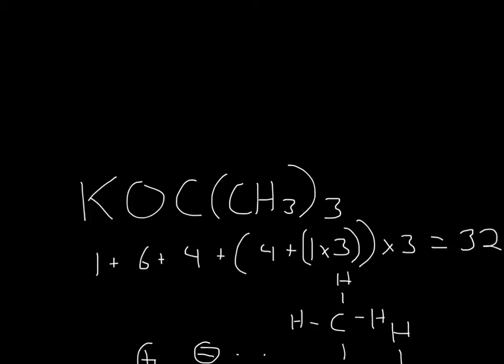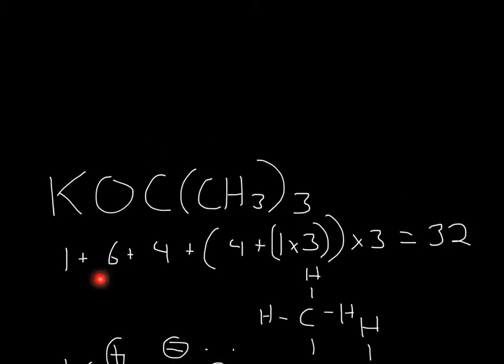For this molecule, to find the Lewis structure, first you need to list out the valence electrons. And that's what I did. For each one of these, I listed the valence electrons, and that will add up to 32.